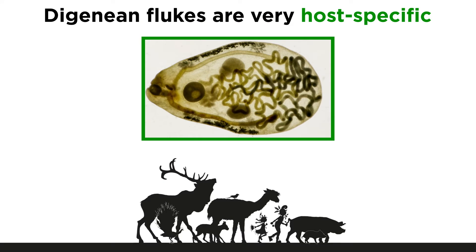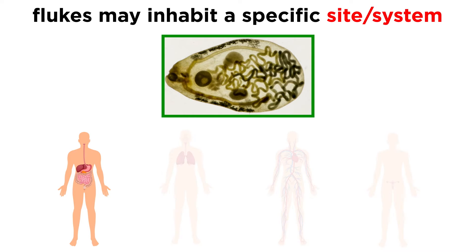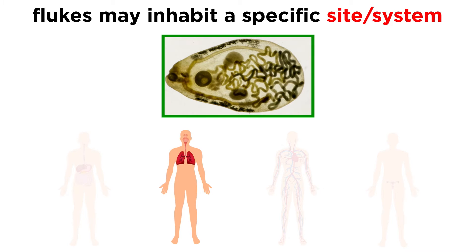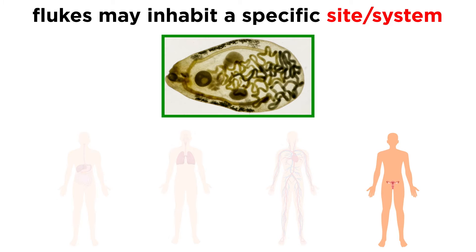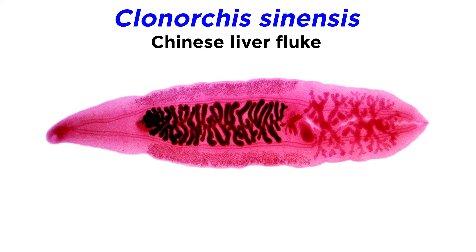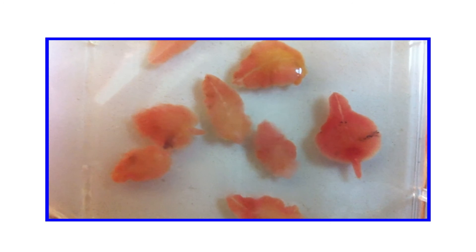Individual species of digenian flukes are usually very host-specific — that is, they can only inhabit specific species. Even within an individual species, a fluke will only inhabit a specific site within their host's body. Some target the digestive system, others the respiratory system, still others the circulatory system, and others the reproductive system. Many, like Clonorchis sinensis, or the Chinese liver fluke, infect different systems in different hosts. However, like everything else in biology, there are exceptions.